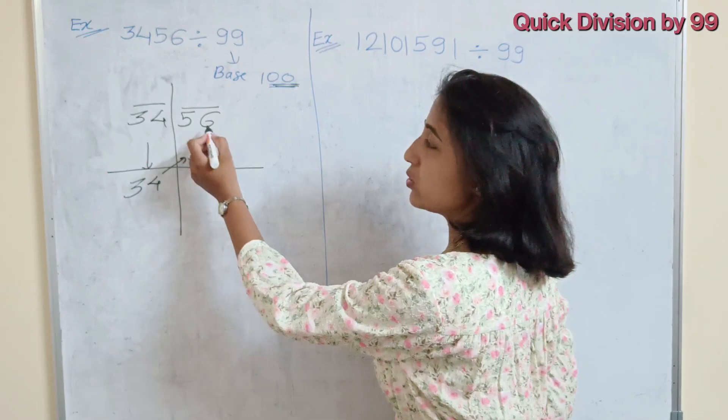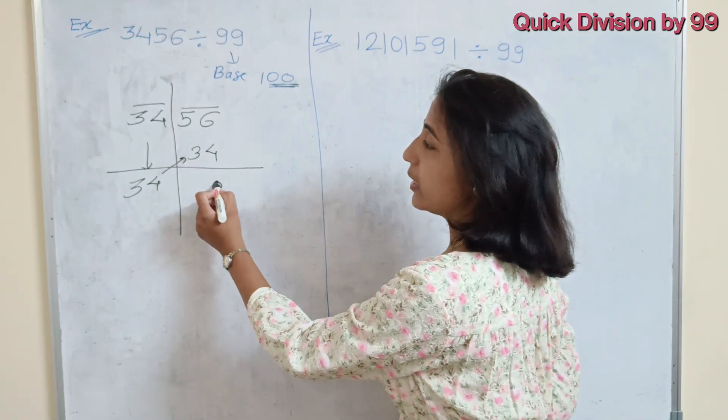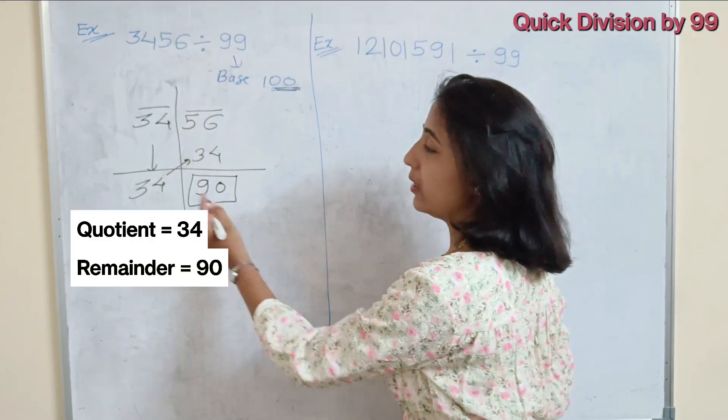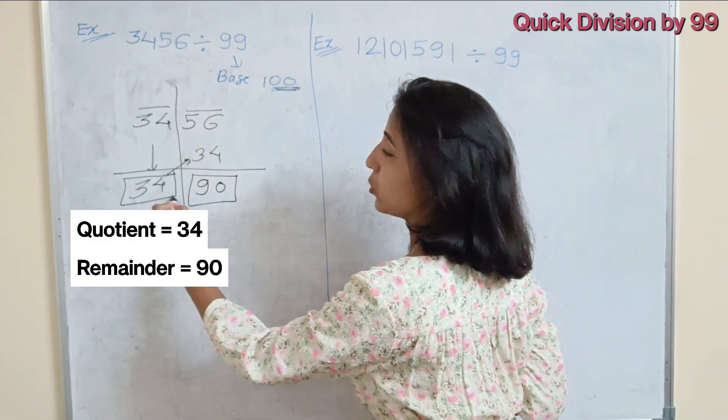So 34 plus of this 56, so it is 90. Now, 90 is less than 99, the remainder and 34 is the quotient.